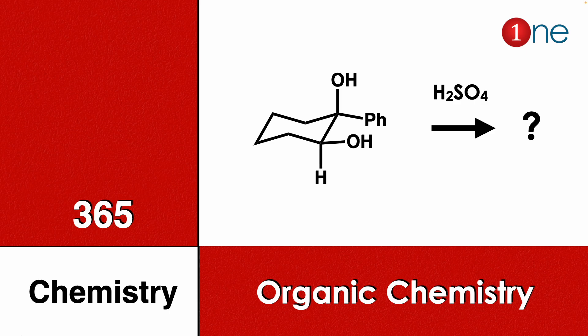Welcome to One Chemistry. This is the 365 Chemistry series — organic chemistry questions. Here you have cyclohexane in chair form with a diol, phenyl, and hydrogen in specified positions, in sulfuric acid. You should find what will be the final product.